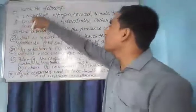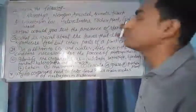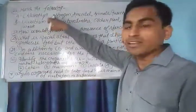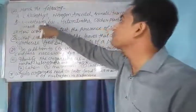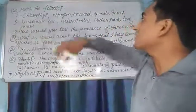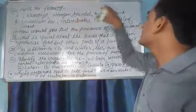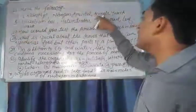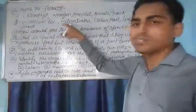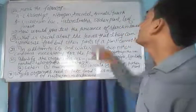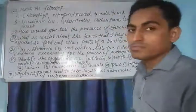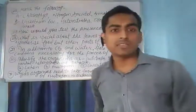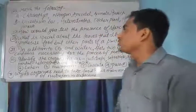Chlorophyll is related to leaf. The second one is nitrogen — it is related to rhizobium bacteria. The third one is amarbale — it is a parasitic plant. The next one is animals — of course it is heterotrophs. The last one is insects — related to pitcher plant that traps or eats insects. So come to the next question.